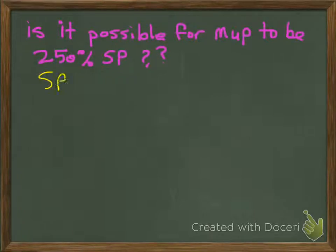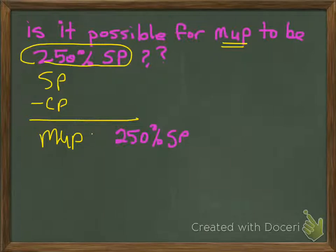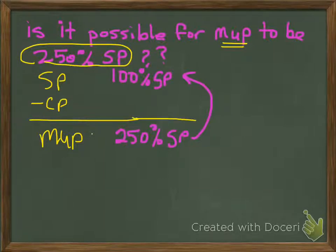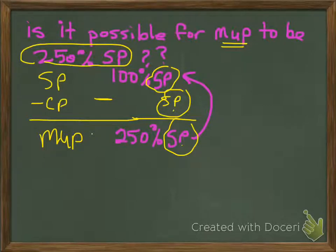Let's start off with our relationship: selling price minus cost price is equal to markup. Now let's assume that the markup is 250% of selling price. In the markup row I'm going to identify that the markup is 250%, but it's based on selling price. I'm going to go to where 100% of selling price is — that's going to go up at the top. What do I subtract from 100% of selling price such that I end up with 250% of selling price? Remember, it has to be based on the same base — all based on selling price, because I can only subtract like terms.